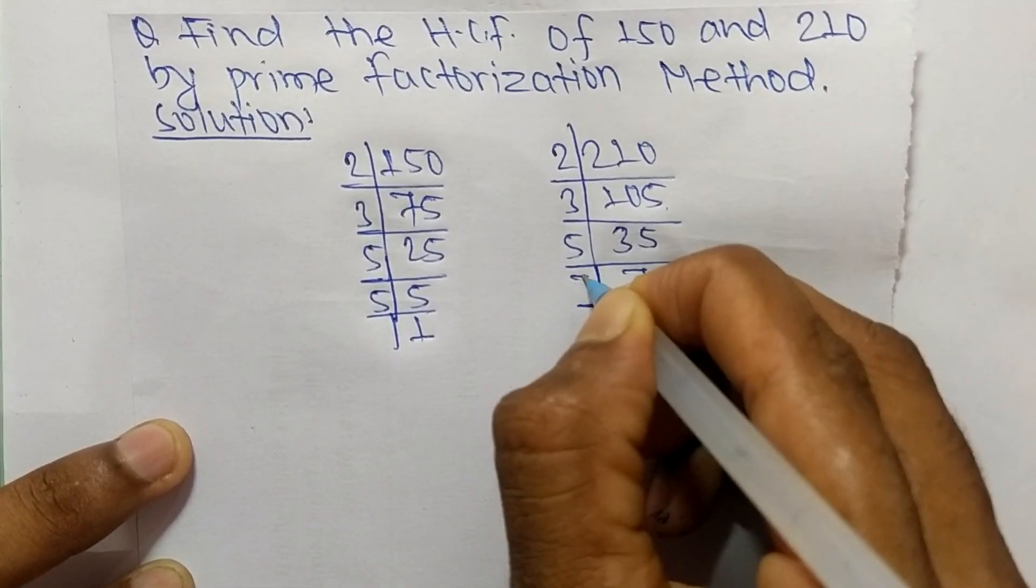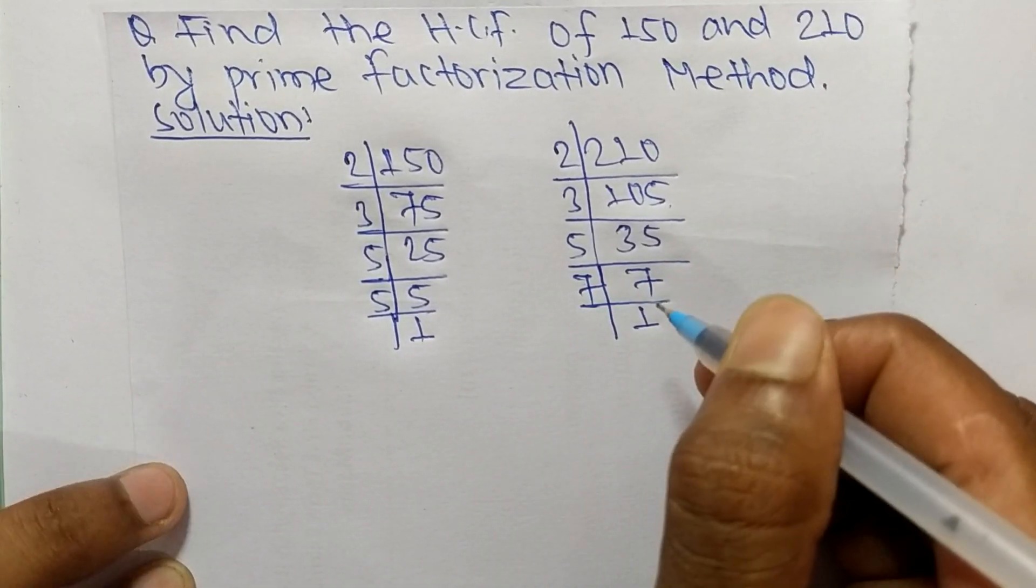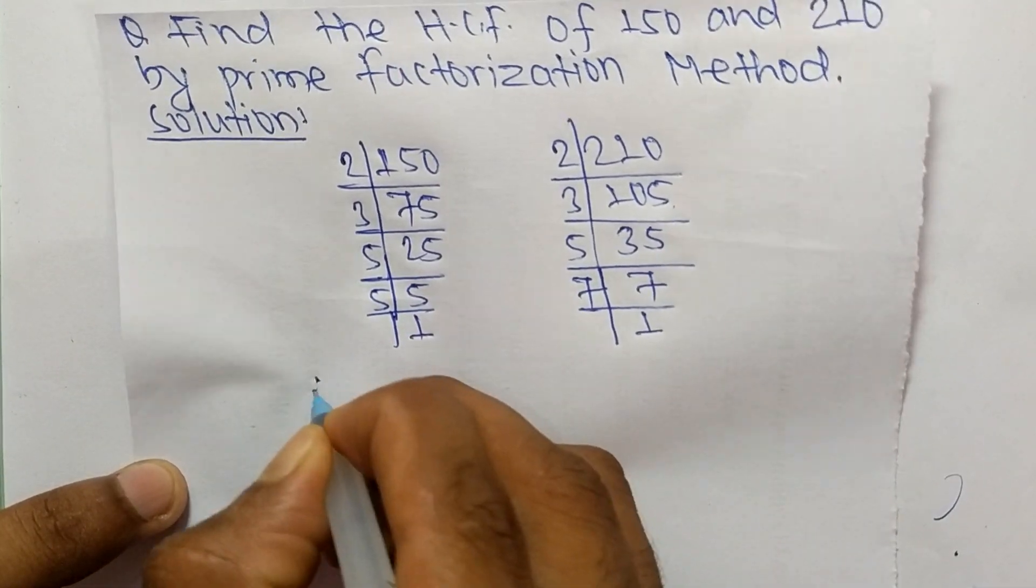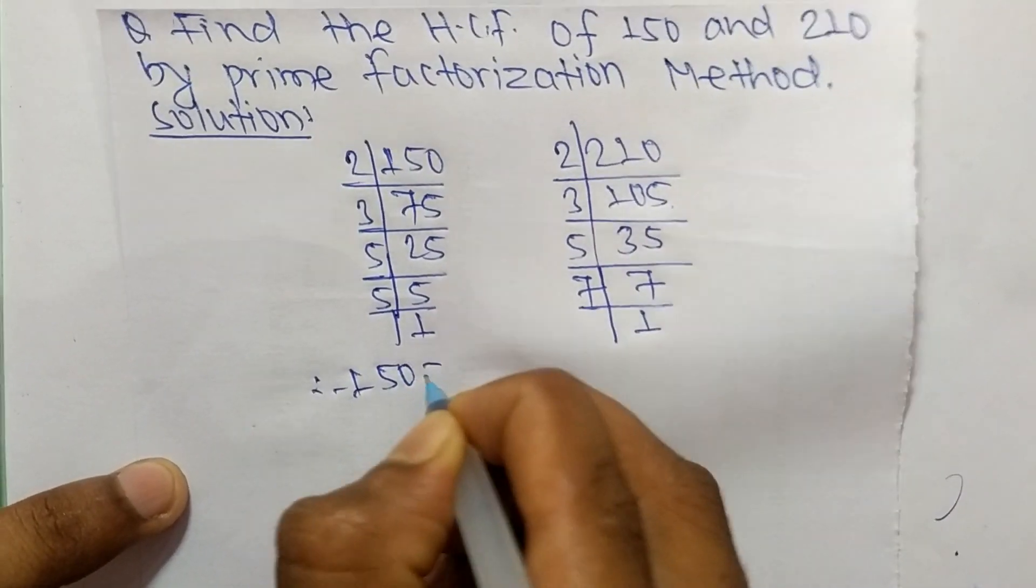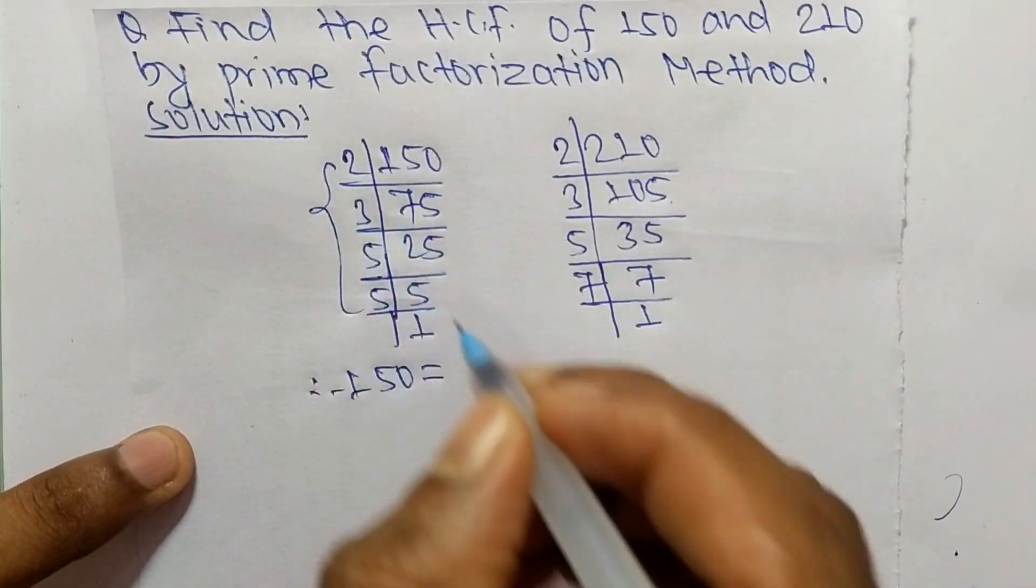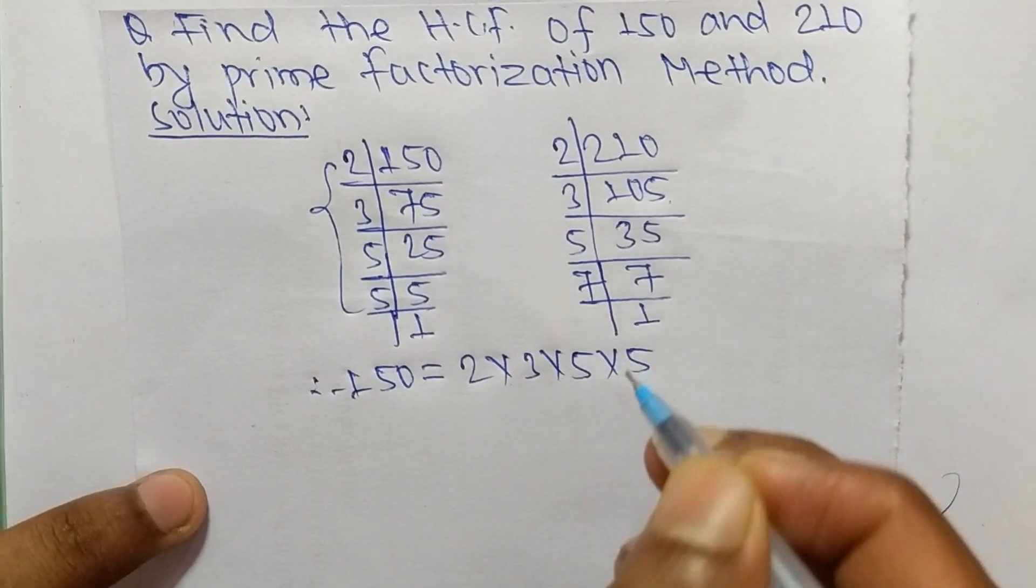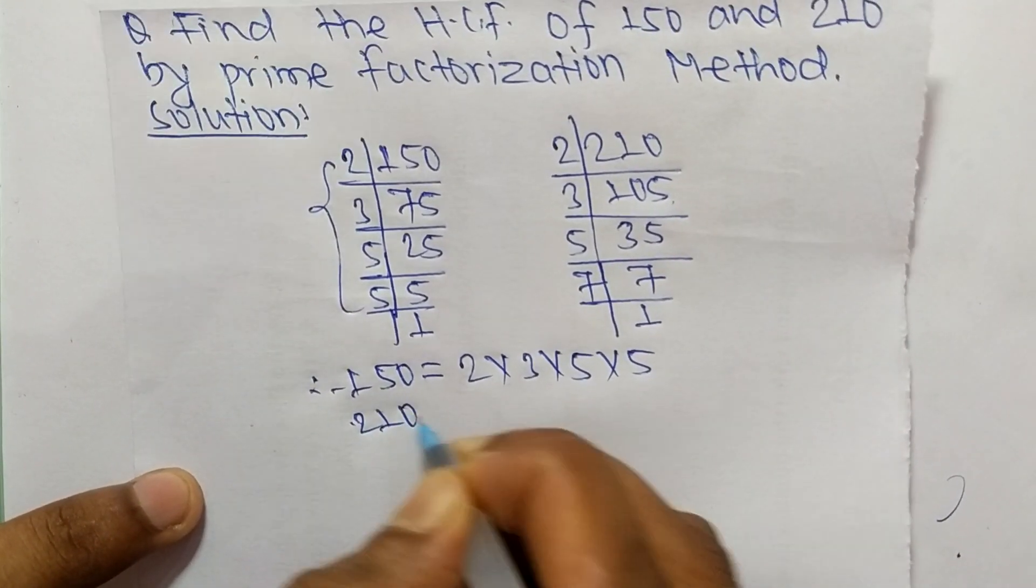So from these prime factors we can write 150 is equal to 2 times 3 times 5 times 5, and 210 is equal to 2 times 3 times 5 times 7.